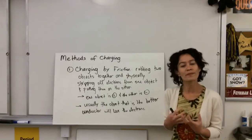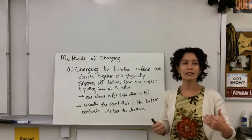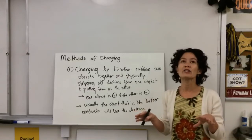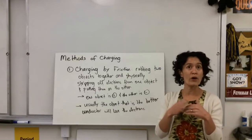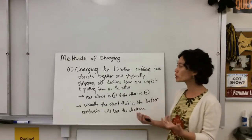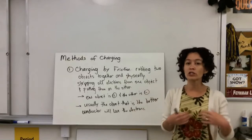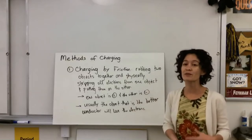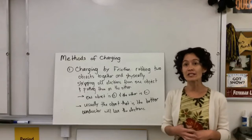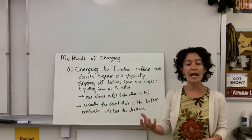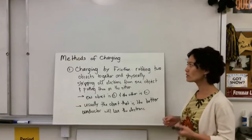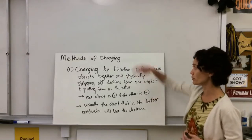A conductor, on the other hand, usually has electrons that are really free to move around, so those electrons are not bound very tightly and are a lot easier to just pull off. So when we're charging by friction, the object that's the better conductor is going to lose its electrons and become positively charged. The object that is the better insulator is going to take those extra electrons and hold onto them pretty tightly. That's the first method: charging by friction.